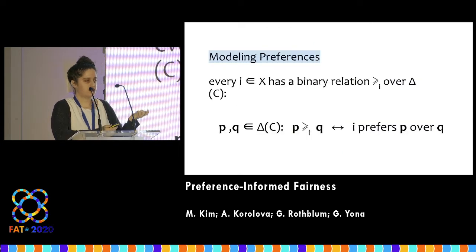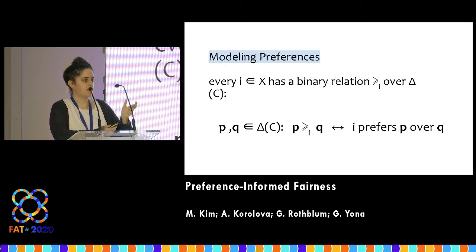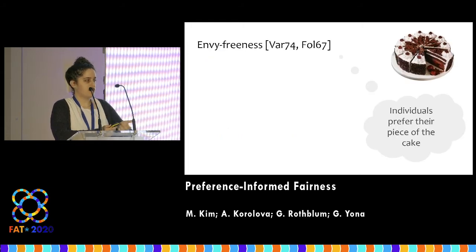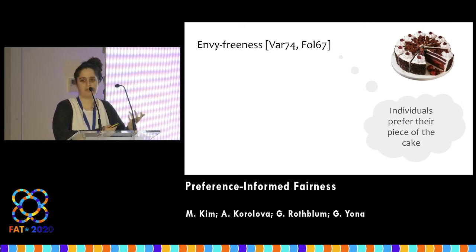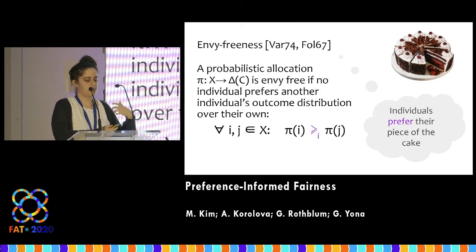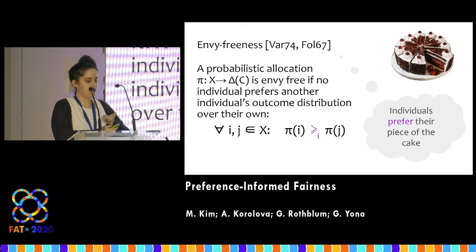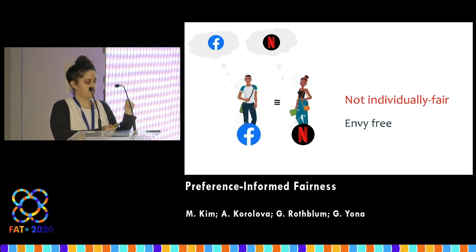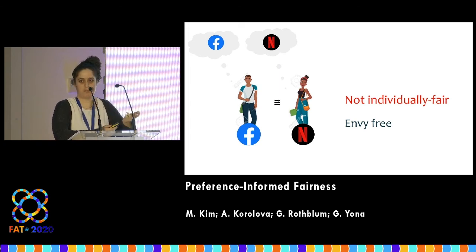Once I'm talking about preferences, I assume every individual has a binary relation over the entire outcome space, so they can compare any two allocations and say which they prefer. There's a very natural notion from the fair division literature: envy-freeness, where they think about dividing a cake and the idea is that every individual prefers their own piece. Formally, for every individual i with respect to every other individual j, i prefers their allocation pi(i) over pi(j). Going back to our example, it was not individually fair, but it is the prototypical envy-free allocation — everyone gets their favorite outcome, so of course no one wants to switch.